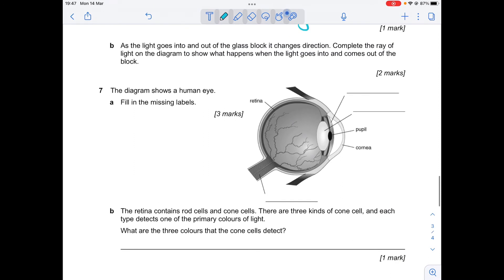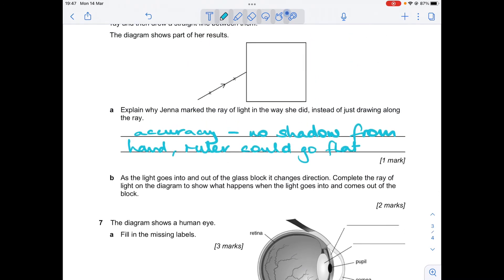Okay, question B. As the light goes into and out of the glass block, it changes direction. Complete the ray of light on the diagram to show what happens when the light goes into and comes out of the block. So you'll remember that when light passes into a different material at an angle, particularly air to glass,